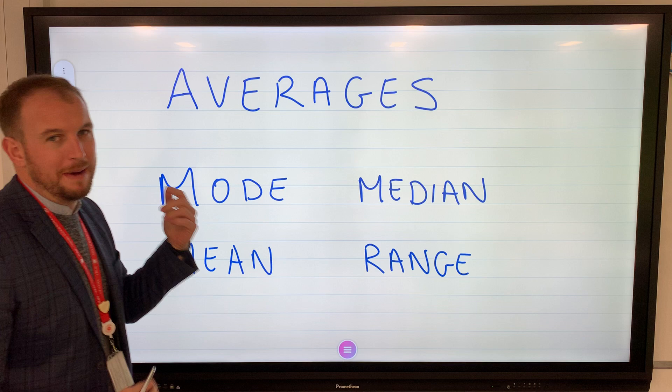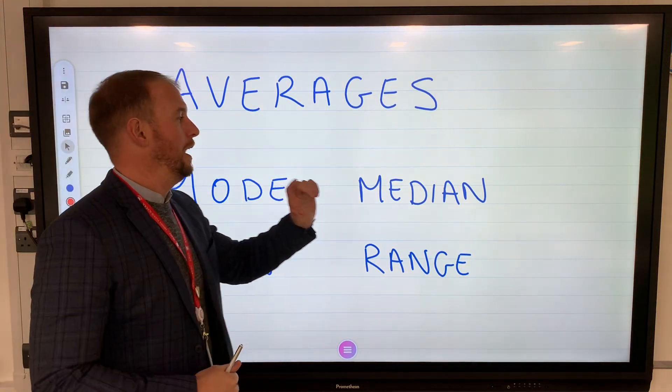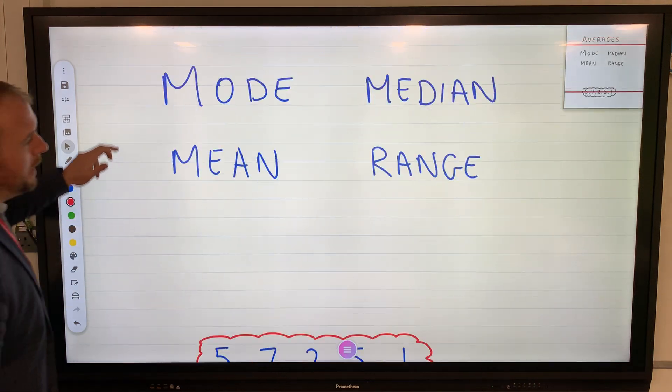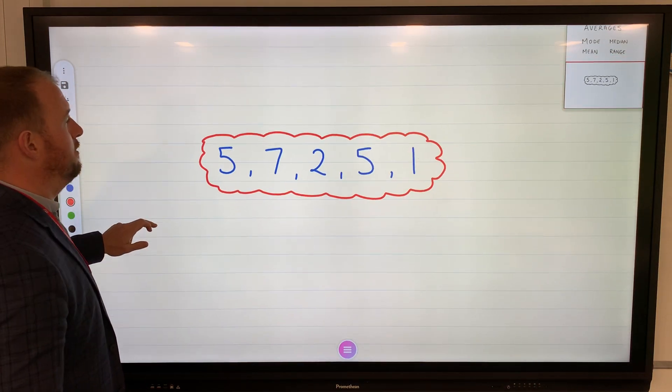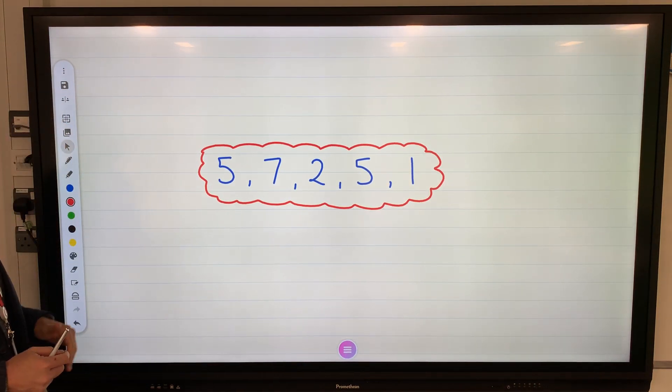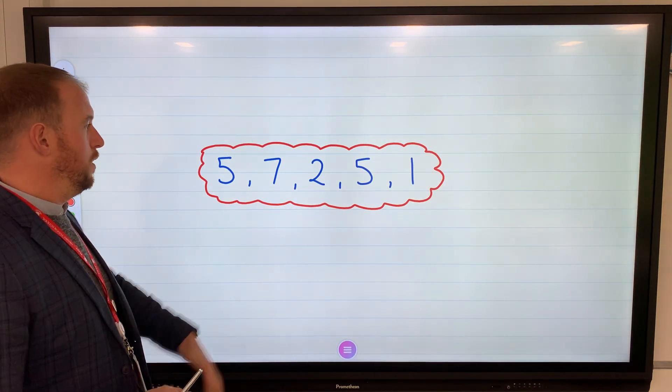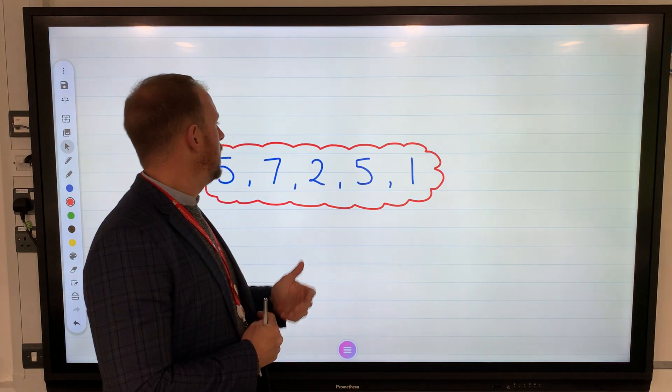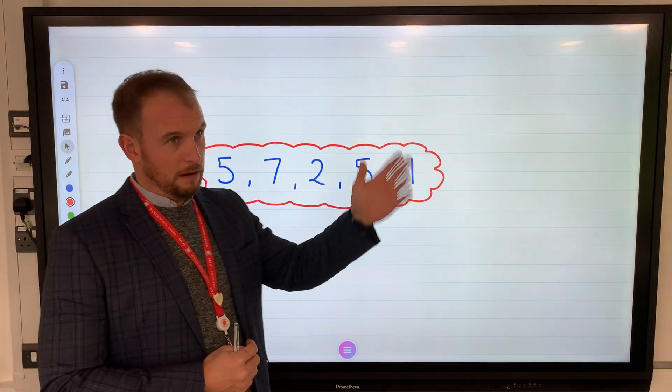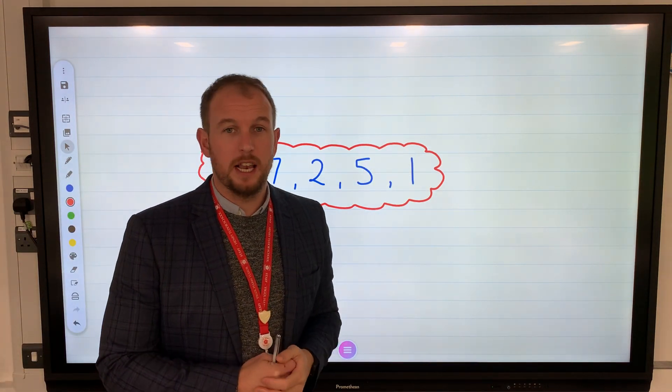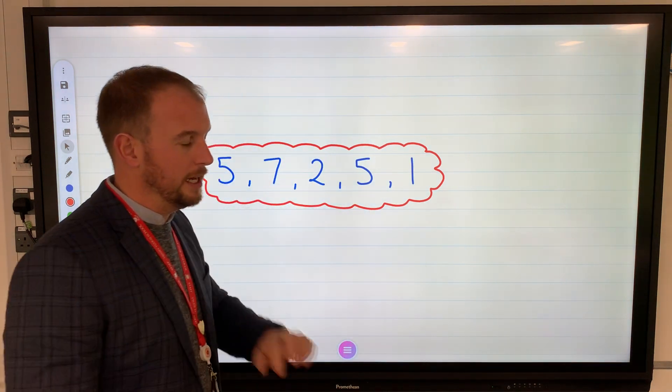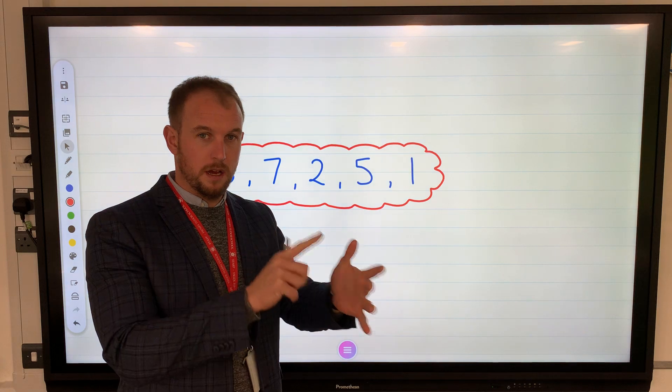Today we are calculating some averages, looking at the mode, median, mean, and range. We need a data set, and there it is: 5, 7, 2, 5, and 1. These could be anything - the amount of goals scored by a person playing football, the amount of eggs chickens lay in their pen, it could be anything. But we're going to calculate the mode, median, mean, and range.